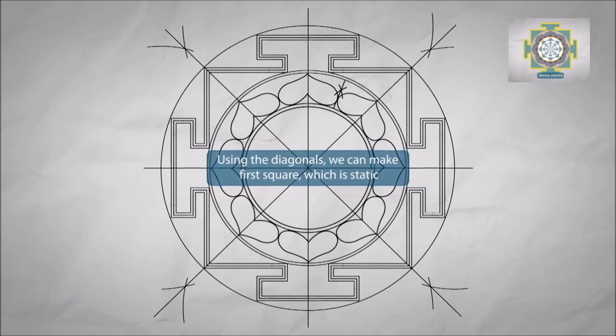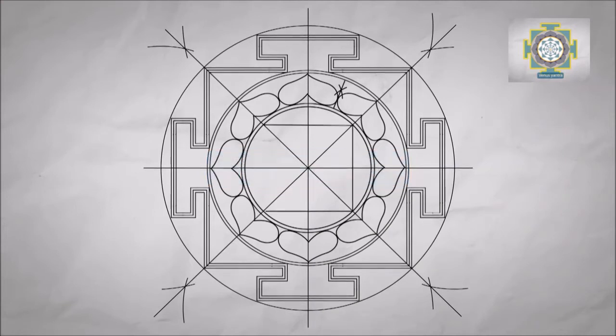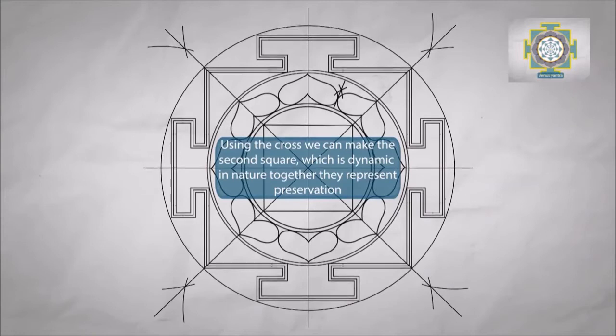Using the diagonals we can make the first square which is static. Using the cross we can make the second square which is dynamic in nature. Together they represent preservation.